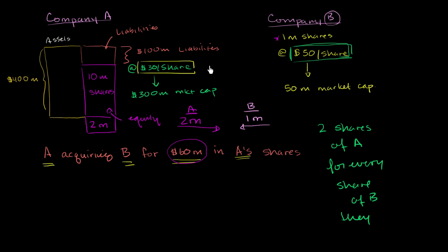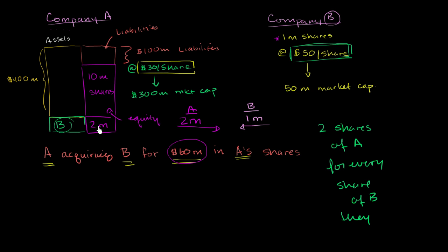If they do take it, then what's essentially going to happen is that those 1 million shares are going to be put onto the asset side of Company A's balance sheet. Company B is now here, because all of their shares are here — it's now completely owned. And the company was able to do that by issuing these shares.